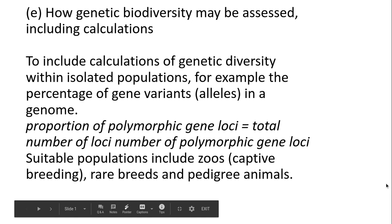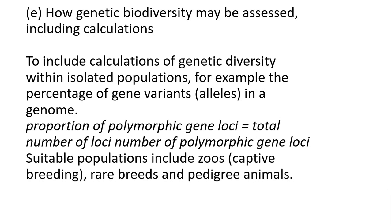Welcome biologists. Today we're looking at 4.2.1 from the OCR specification for A-Level Biology, which is biodiversity. We're looking at specification point E, which is how genetic biodiversity can be assessed using calculations. You do need to know this calculation for your exam, but it is quite easy and straightforward to use and process.